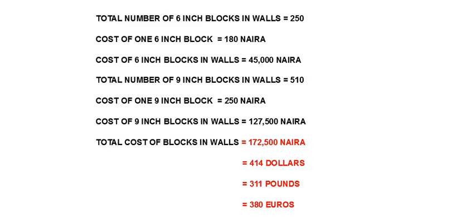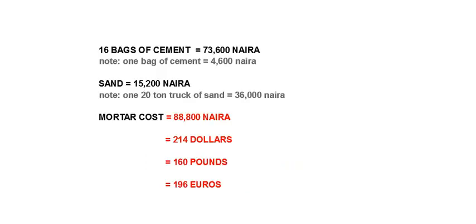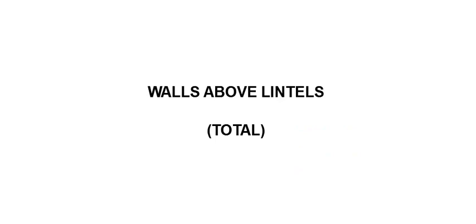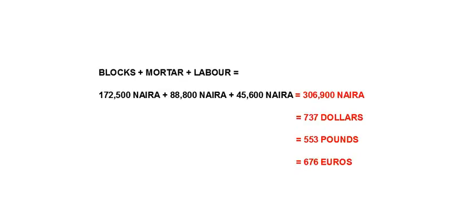Next we'll move over to the walls above the lintels. The blocks will cost 172,500 Naira, approximately 414 dollars, 311 pounds or 380 euros. The cost of mortar is 88,800 Naira, approximately 214 dollars, 160 pounds or 196 euros. The cost of laying blocks is 45,600 Naira, approximately 110 dollars, 83 pounds or 101 euros. So the total cost of the walls above the lintels is 306,900 Naira, approximately 737 dollars, 553 pounds or 676 euros.